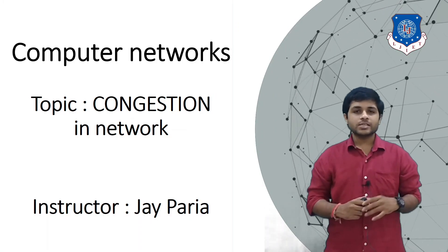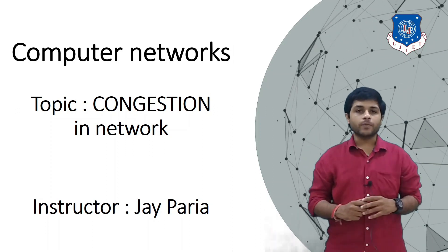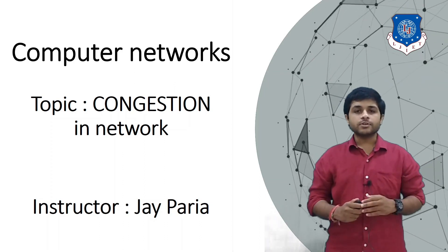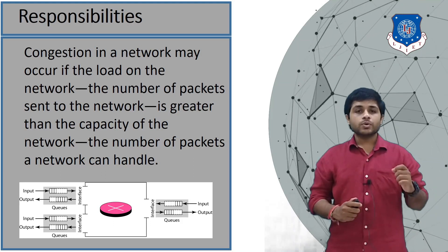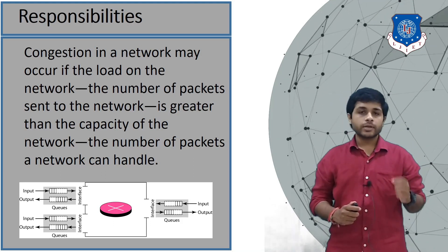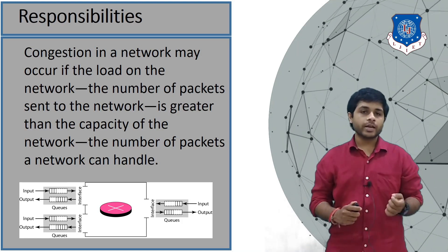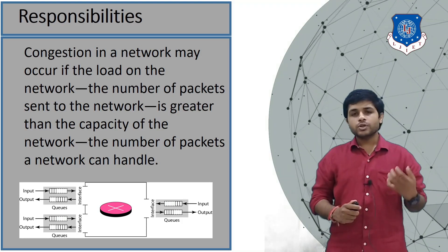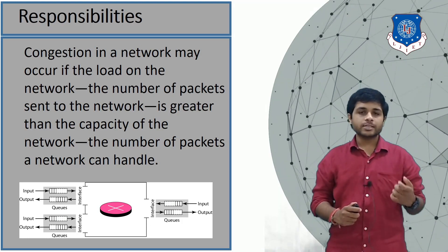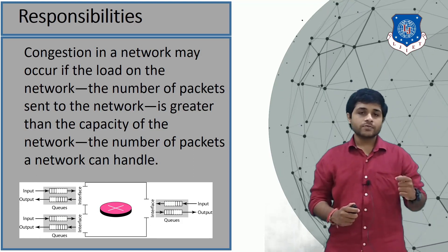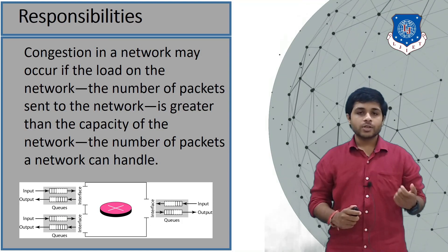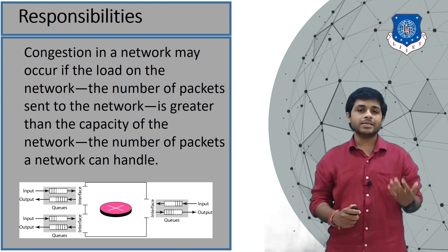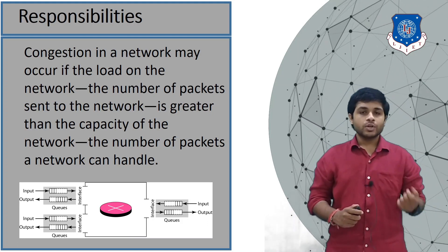Hi everyone, this is Jay, your instructor for Computer Networks. In this session we will discuss congestion in the network. Congestion occurs when the number of packets sent to the network is greater than the capacity of the network. For example, if your computer is sending 10 packets per second on a link that can only transfer 5 packets per second, that link will become congested and the remaining packets will be discarded.